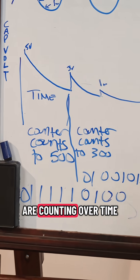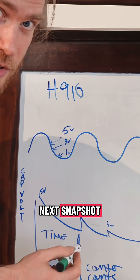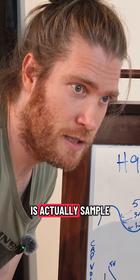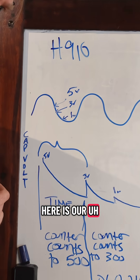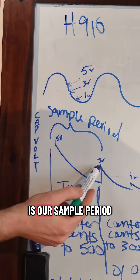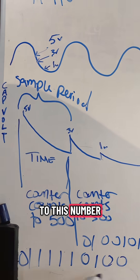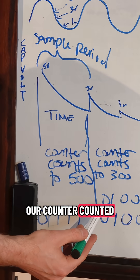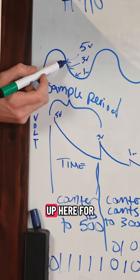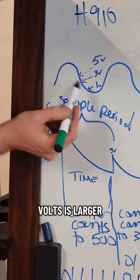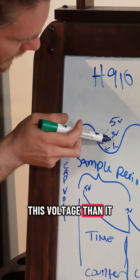What we're doing is we are counting over time to the highest number that it can before the next snapshot — and remember, snapshot is actually sample. So this right here is our sample period. In this sample period, our counter counted up to this number, and in this sample period our counter counted up to this number, which is smaller. This voltage for the 5 volts is larger, so our counter was able to count to a higher number for this voltage than it was for this voltage.